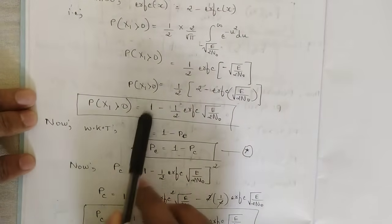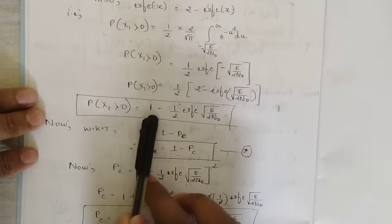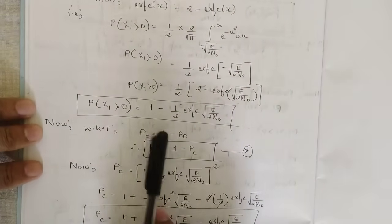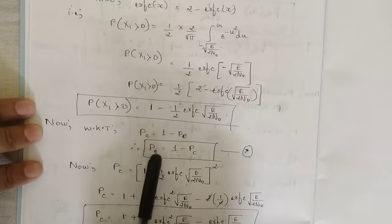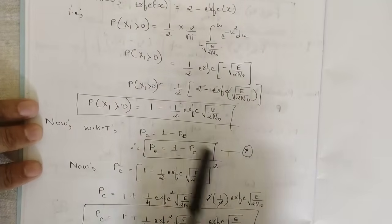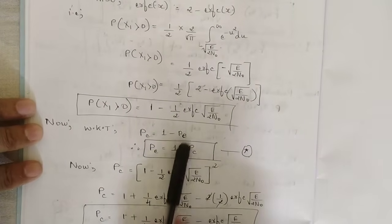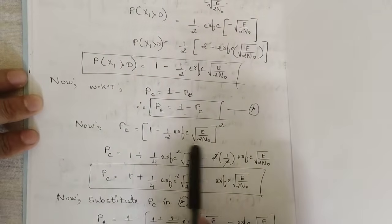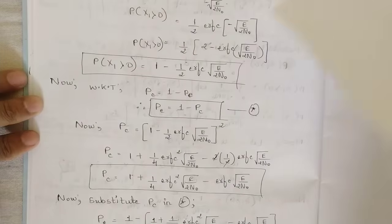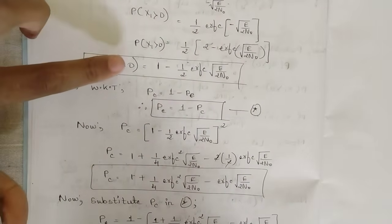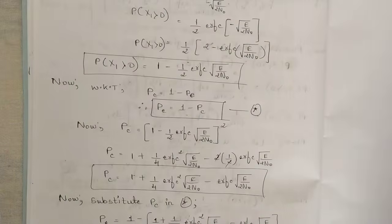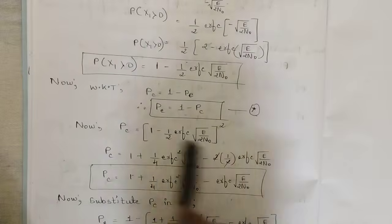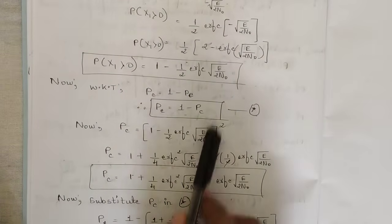So P(x1 > 0) = 1 − (1/2) erfc(√(E/2N0)). Since we need to account for both x1 > 0 and x2 > 0, the correct decision probability is the square of this: PC = [1 − (1/2) erfc(√(E/2N0))]².